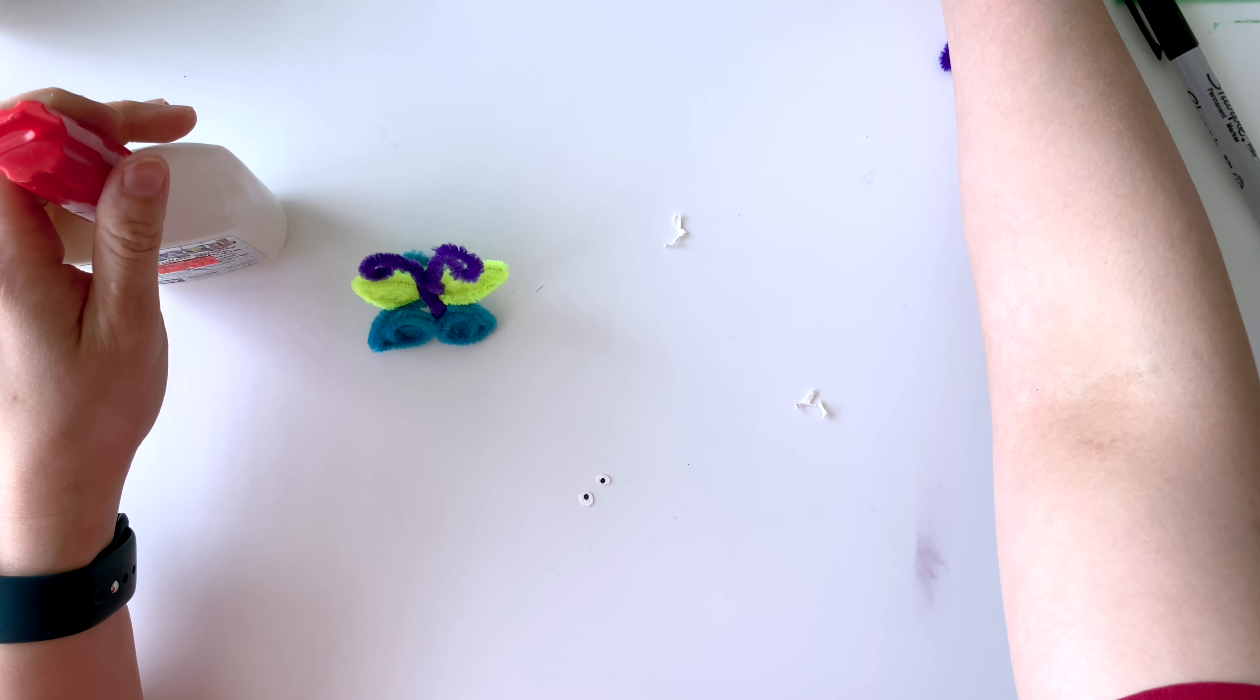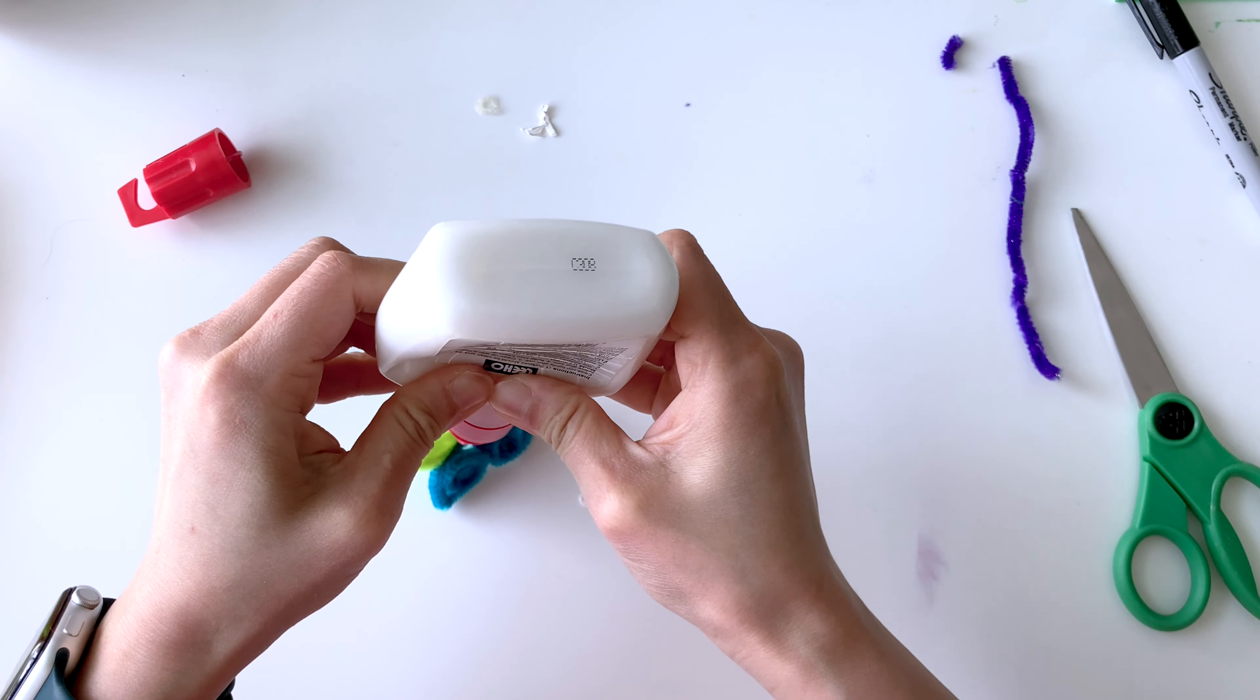Now I'm just going to squeeze a little bit of glue onto the body of the butterfly. I really like these dollar store white glues with the fine tip. That way, if you are planning on gluing something a little bit smaller, it has a more fine point rather than coming out with a big blob.